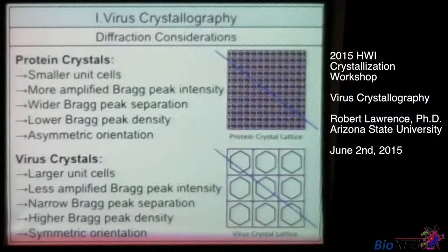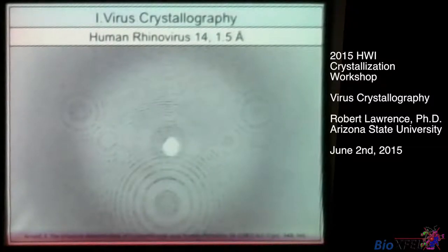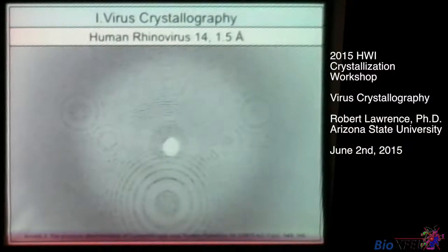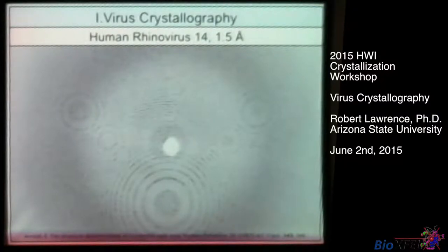Here's a picture of a diffraction pattern from a rhinovirus at 1.5 angstroms. You can see there are quite a few data points there — that's a lot of data to process. When we're collecting data from a virus crystal, it may require more processing than a protein crystal, assuming it diffracts to a really high resolution. The rhinovirus is a non-envelope virus, and non-envelope viruses traditionally diffract to a much higher resolution than envelope viruses do.